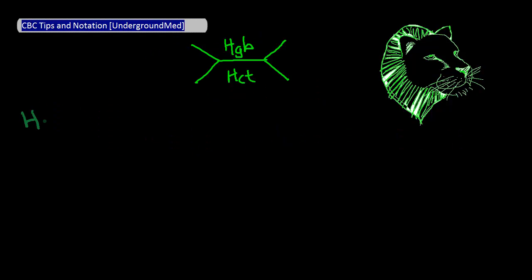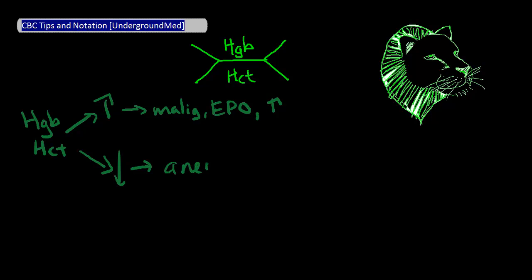For the hemoglobin and hematocrit values, it's rare that you'll see high values, unless there's some type of RBC malignancy, whether or not the patient's using EPO, they're on steroids, or they live at a high altitude. If the hemoglobin and hematocrit values are low, which is much more common, it could suggest some type of nutrient-related anemia, occult or acute bleeding, among other things.